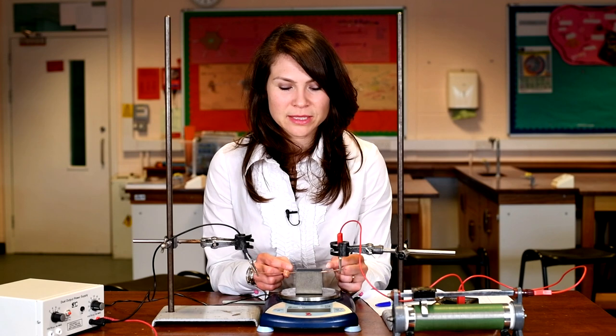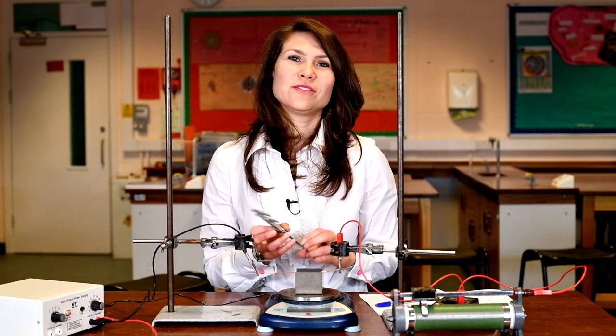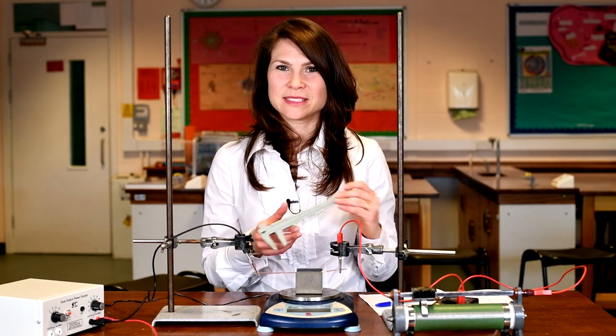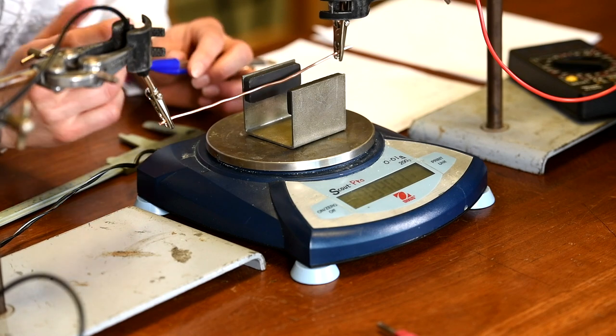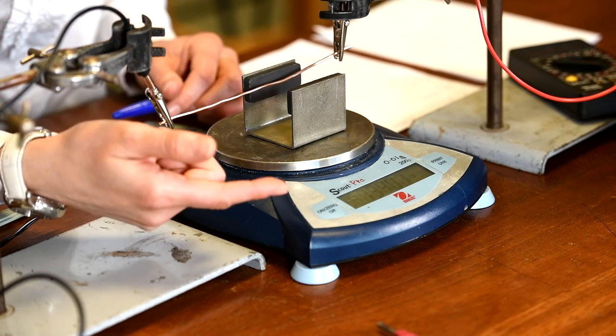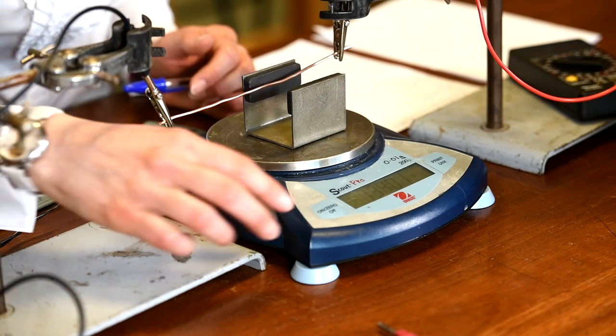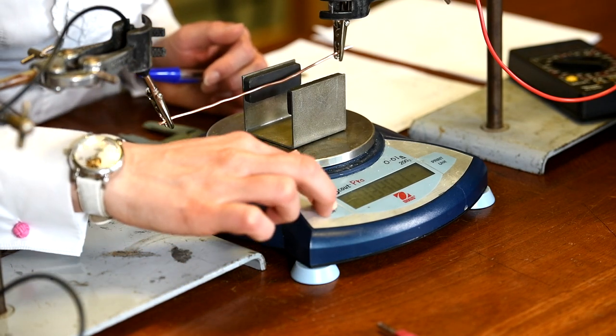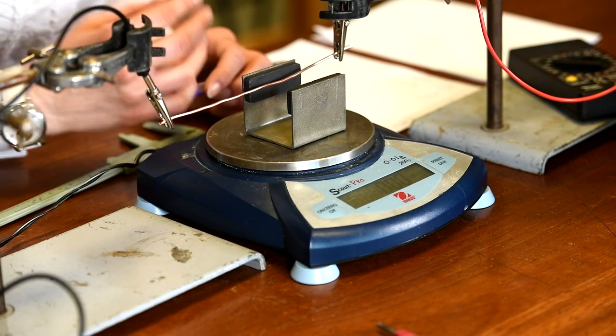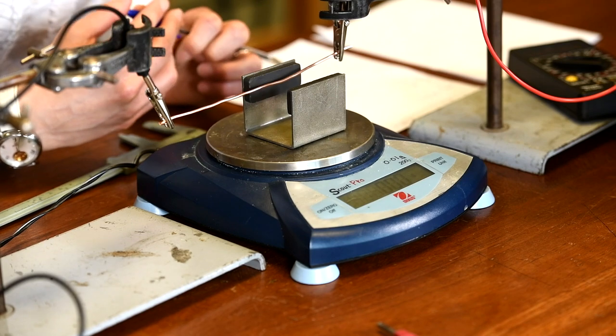Since our independent variable is the current running through the wire, we need to keep the length of the wire constant. So this is actually equal to the length of the magnet, the length of the magnetic field that the wire is running through. And I've measured this with a vernier caliper, and it's exactly 5 cm. So now we're ready to take our readings. I'm going to take one set of readings, but actually it's really good practice to take three sets of readings and then take an average. Before we start, and before I run a current through the wire, I can see that the balance is already showing a mass of the cradle and the magnets. So I need to tare this so that we start it at zero. This will ensure that the mass taken is only due to the force acting on the wire.